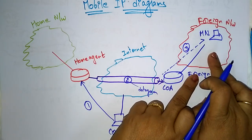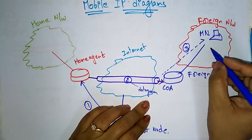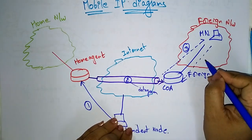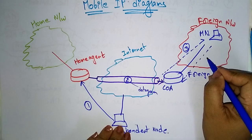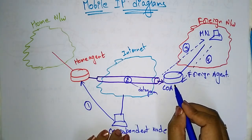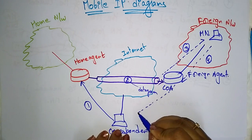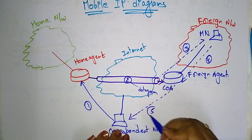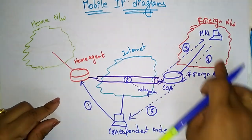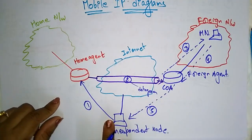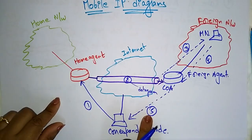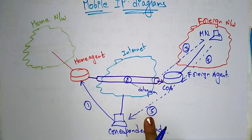After receiving the data, the mobile node sends it back to the foreign agent, and the foreign agent sends it back to the correspondent node. The information passes in a cycle just like a triangle, so we also call it the triangle IP protocol.